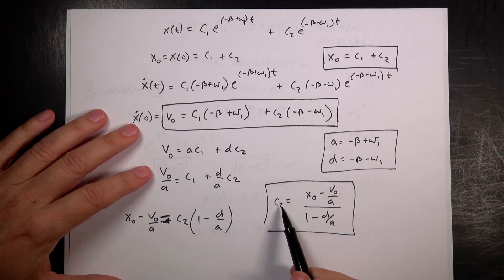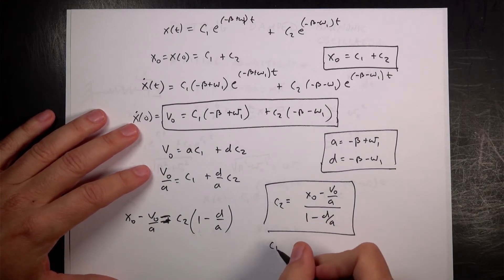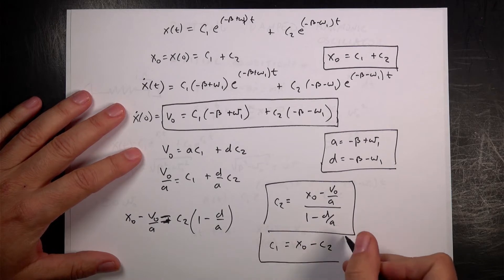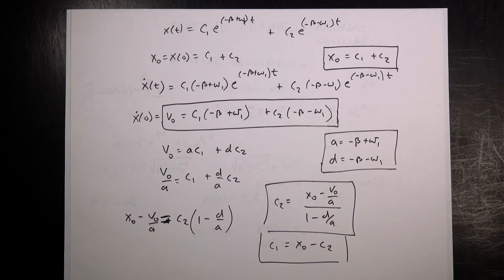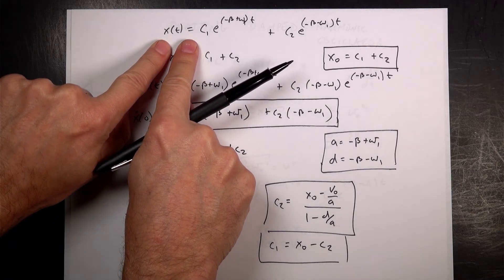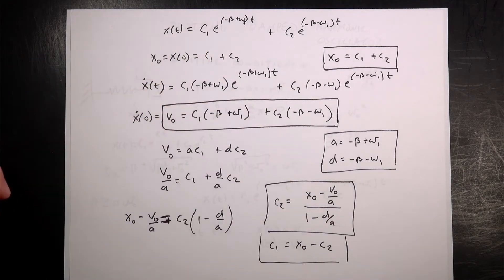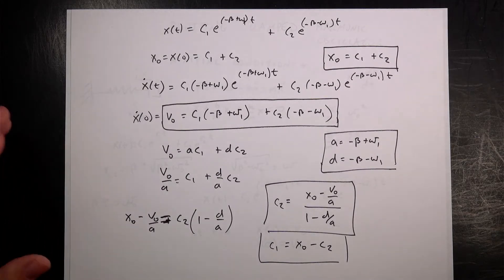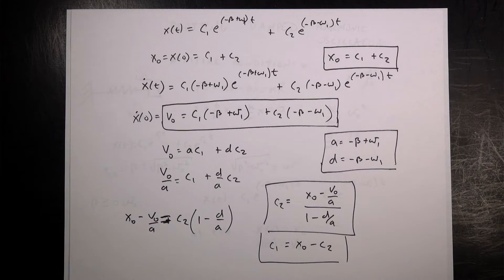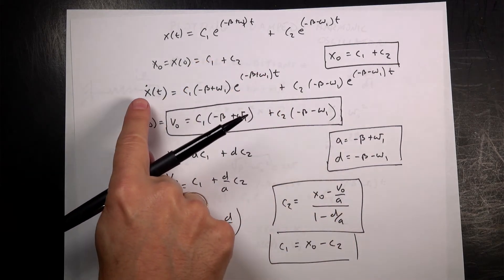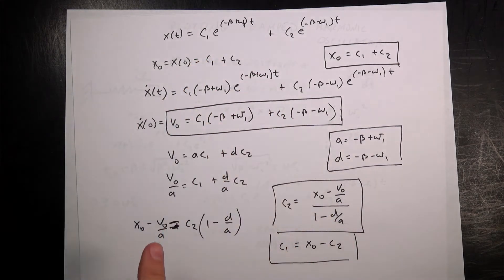Then c₁ = x₀ − c₂. So now I have both c₁ and c₂. I'm going to use this function to plot — first x as a function of time, then x-dot as a function of x, which is a phase-based plot. I need to pick parameters for m, k, b, and the initial position and velocity. Let's switch over to Python.